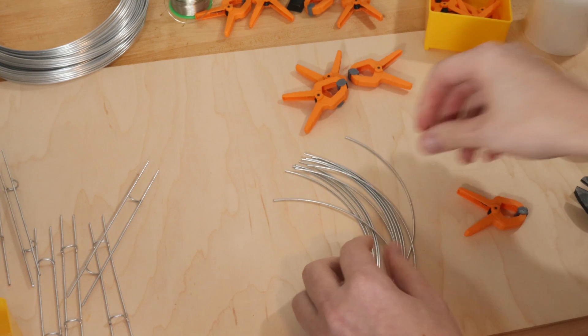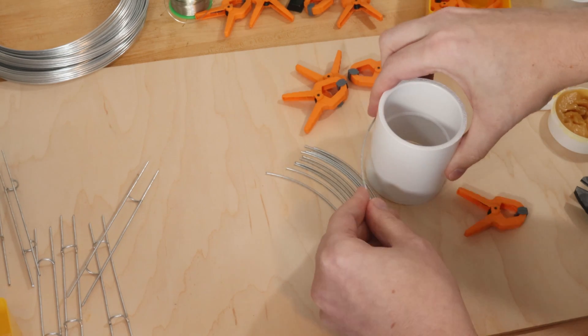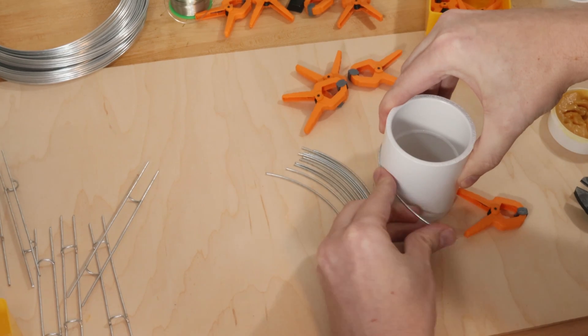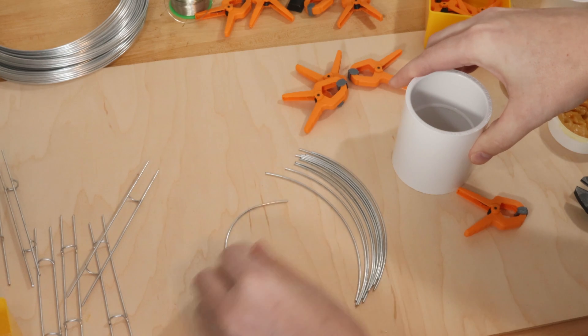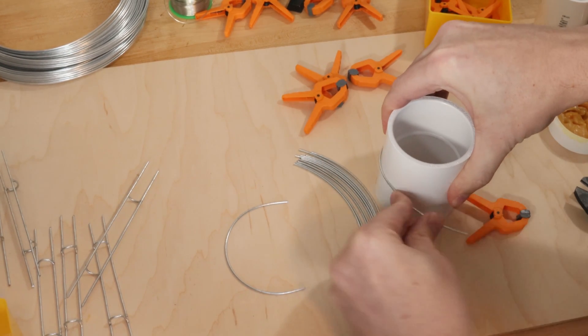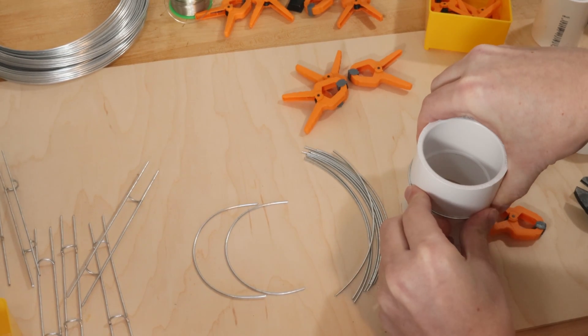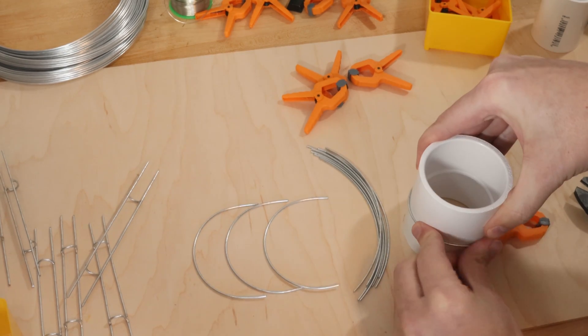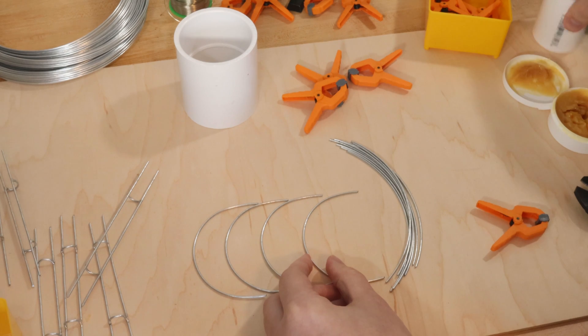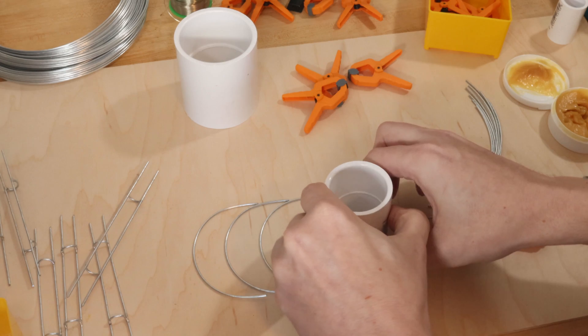Next are U segments. Here I took some of the wire straight off the coil. I didn't bother straightening it. I have a PVC fitting that I'm wrapping the wire around. This one I'm wrapping it tight. That creates this U shape. I have another PVC fitting. This one's a smaller diameter. Lets me create the inside radius of the corners.